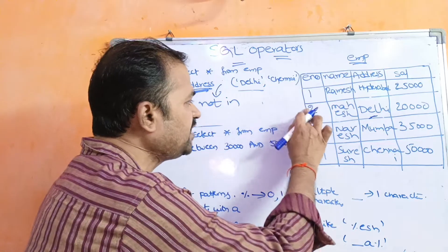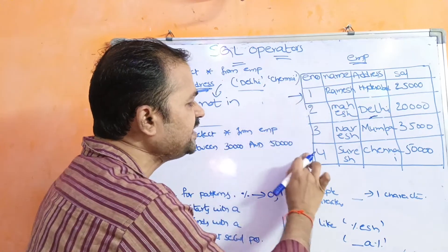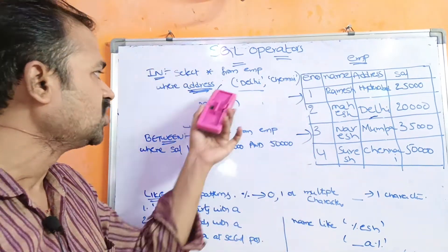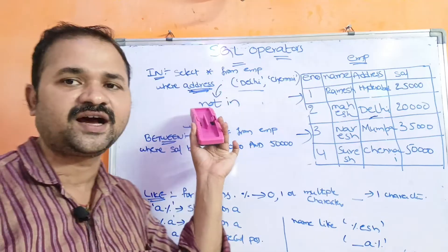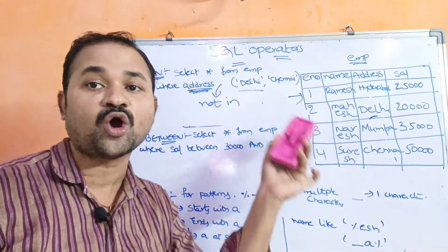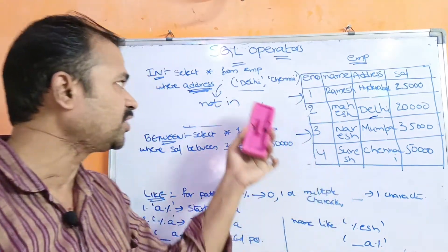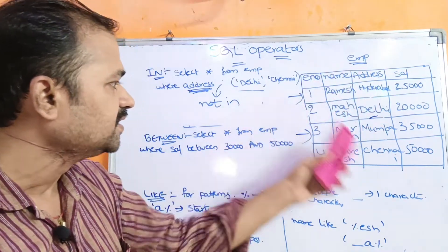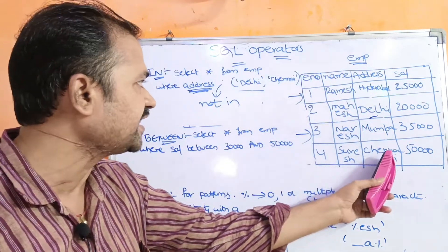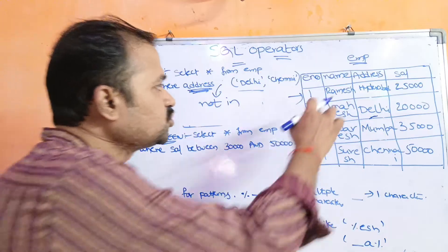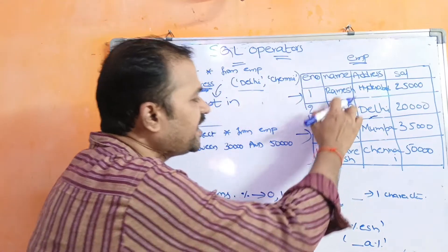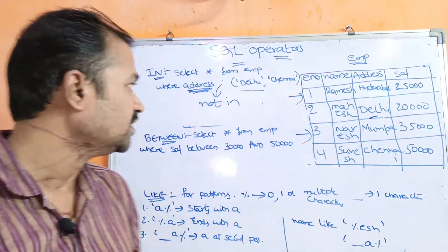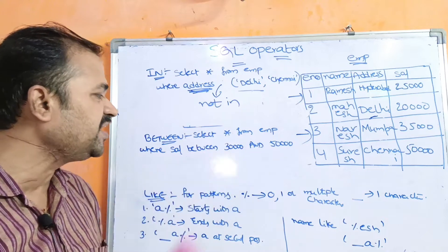So what will happen? The first record and the third record will be displayed, because the condition is address NOT IN. The first record has Hyderabad and the third record has Mumbai — neither is Delhi nor Chennai — so these two records will be displayed.